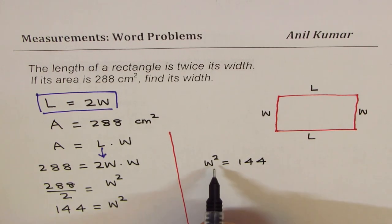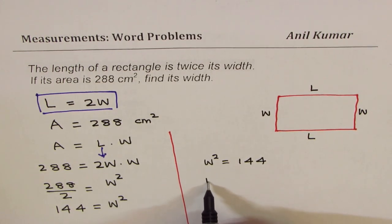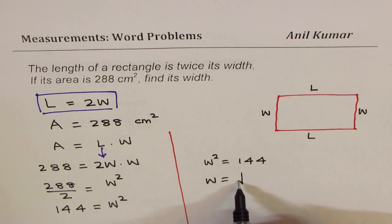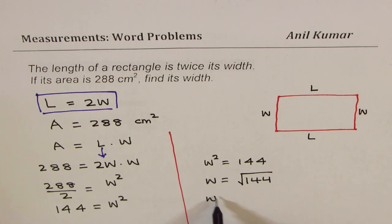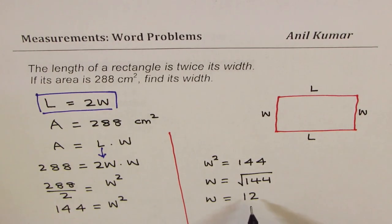To find width, we'll square root both sides. So we say W is square root of 144. You can use calculator, and when you use you get 12 as your answer. You know 12 times 12 is 144, so